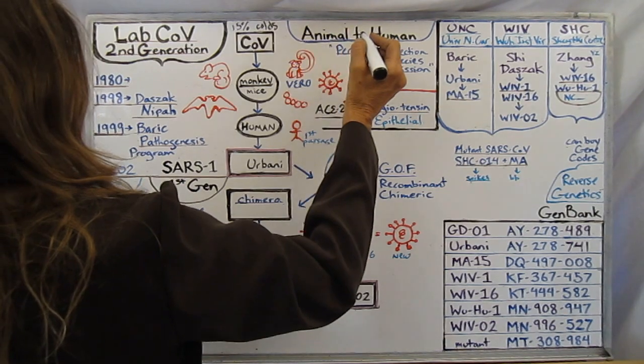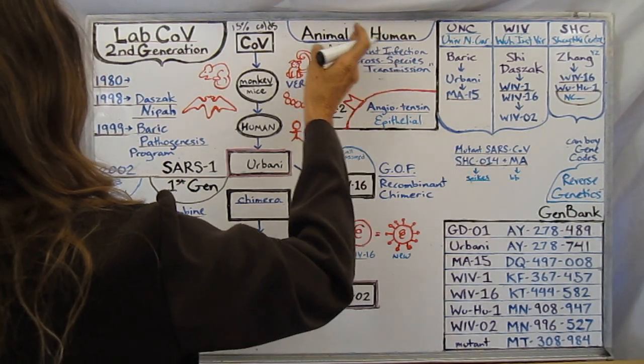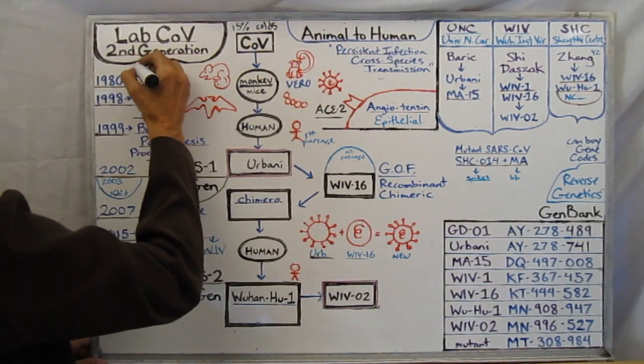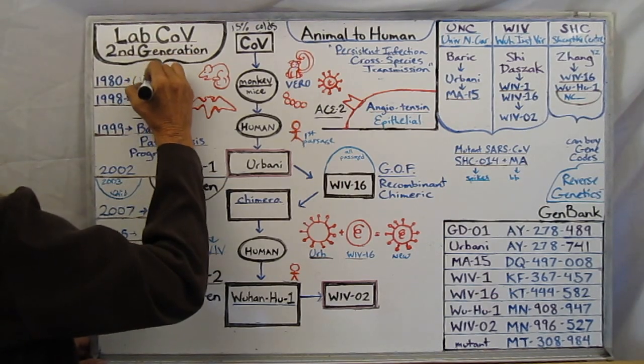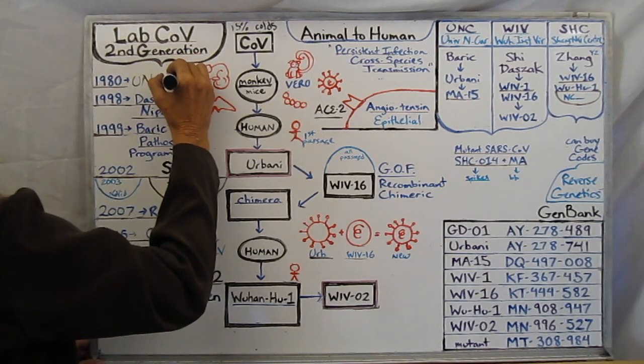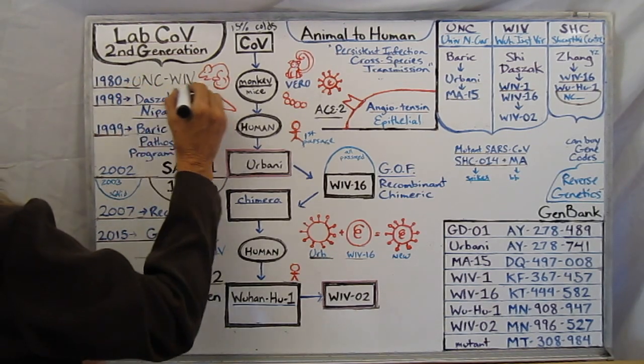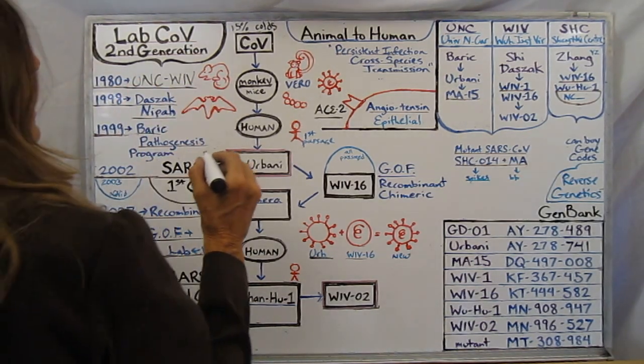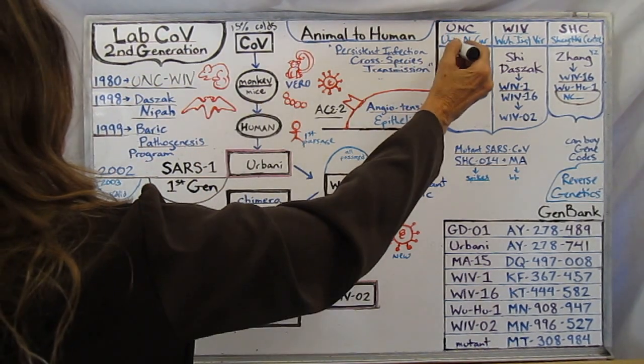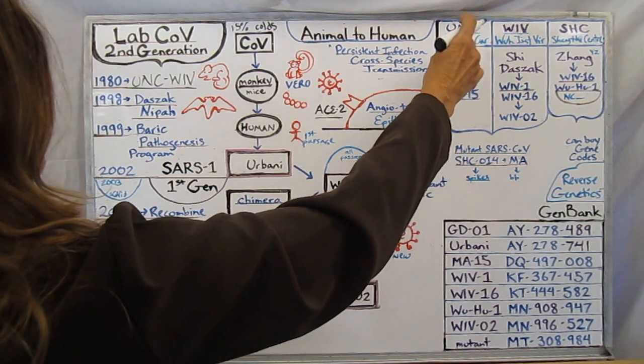What happened was in the 1980s University of North Carolina collaborated with the Wuhan Institute of Virology and they had an exchange student program between their laboratories.